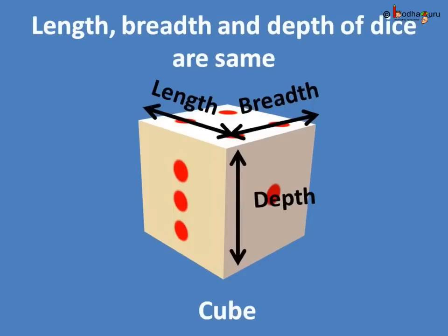So, a dice looks the same from all views and it is called a cube.